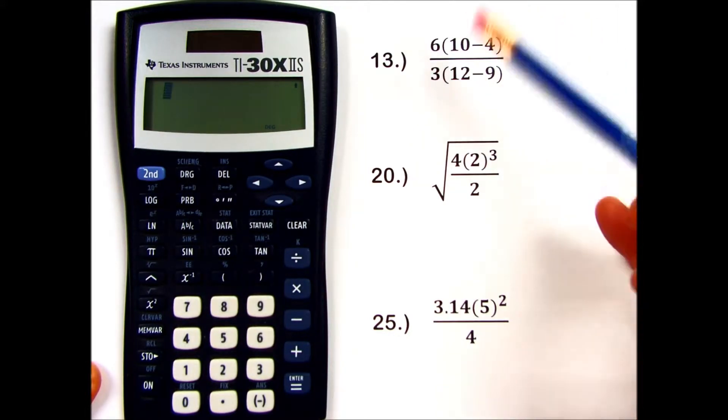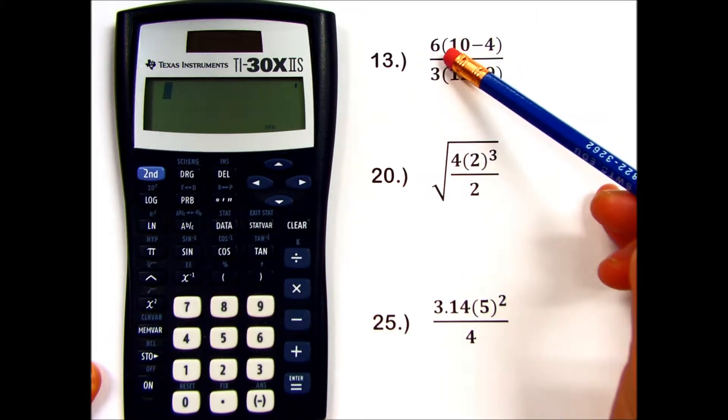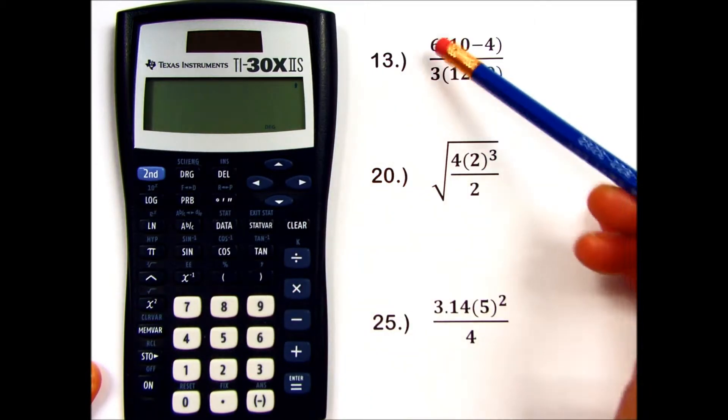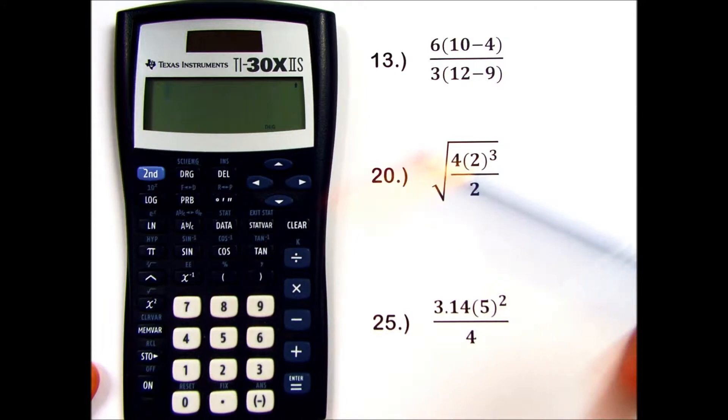I would like to mention that when you see a number next to parentheses, that assumes multiplication, and I will use my multiplication key even though it's not written on paper.